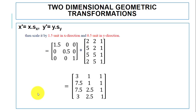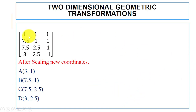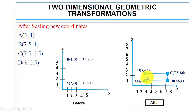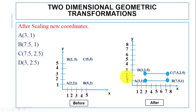After the scaling multiplication, we get the new coordinates. For point A we have (3, 1), for point B it is (7.5, 1), for point C it is (7.5, 2.5), and for point D it is (3, 2.5). You can see point A at x=3, y=1; point B at x=7.5, y=1; point C at x=7.5, y=2.5; and point D at x=3, y=2.5.